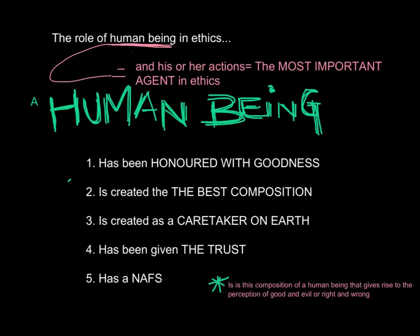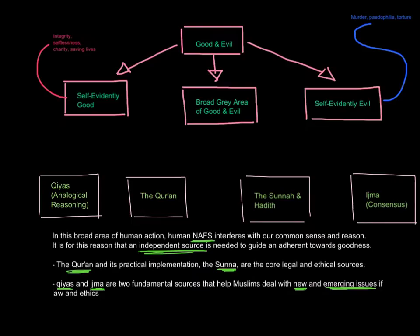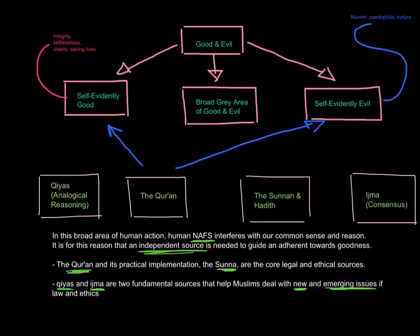Because of these things, options for good and evil are possible. Human beings have the ability to recognise goodness and strive to uphold what is right, but our choices can be negatively influenced by the emotions, desires, and selfish impulses of the nafs. Human action and behaviour can be divided into categories. The Quran outlines actions that are self-evidently good — such as integrity, selflessness, charity, and saving lives — as well as those that are self-evidently evil, such as murder, pedophilia, and torture. It is within the broad grey area of good and evil where human nafs can interfere with our common sense and reason, and it is for this reason that an independent source is needed to guide an adherent towards goodness.